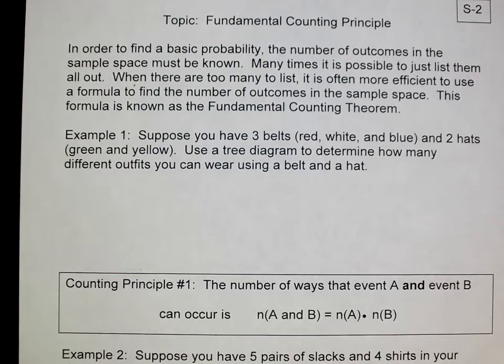Looking at a fundamental counting principle of probability. I mentioned this in a previous video. In order to find a basic probability, the number of outcomes in the sample space must be known. Many times it's possible to just list them all out. If there are too many to list, it's often more efficient to use a formula to find the number of outcomes in the sample space. This formula is known as the fundamental counting theorem.